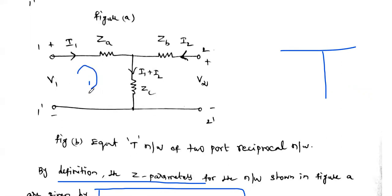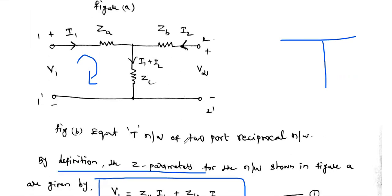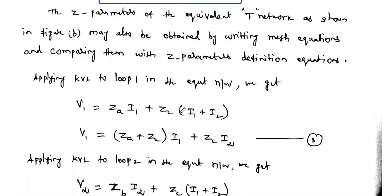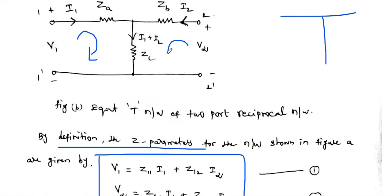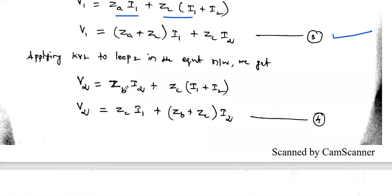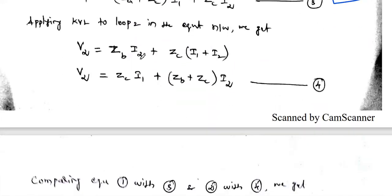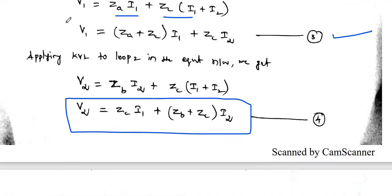Writing KVL for the input loop: V1 = I1·ZA + ZC·(I1 + I2). Collecting the I1 terms: V1 = (ZA + ZC)·I1 + ZC·I2. Consider this as equation number three. Similarly, writing KVL for the second loop: V2 = I2·ZB + (I1 + I2)·ZC. Collecting terms: V2 = ZC·I1 + (ZB + ZC)·I2. Consider this as equation number four.